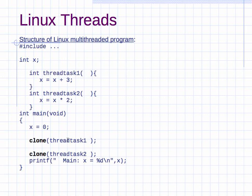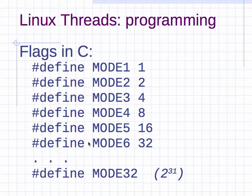You might start with x equals zero, call thread_task_1, and call thread_task_2. Thread_task_1 might run and increment x from 0 to 3, then thread_task_2 might multiply x by 2, giving 6. Or thread_task_2 might go first: x equals 0 times 2 is 0, then thread_task_1 sets x to 0 plus 3, giving 3. Or main might print before either thread runs, giving 0. So even this simple program sharing one variable between two threads can print 0, 3, or 6 — it is hard to predict.